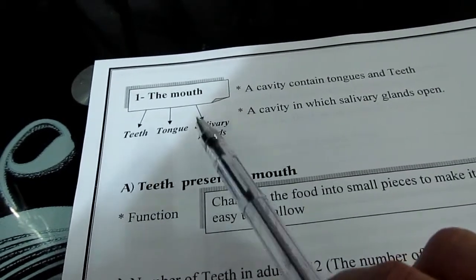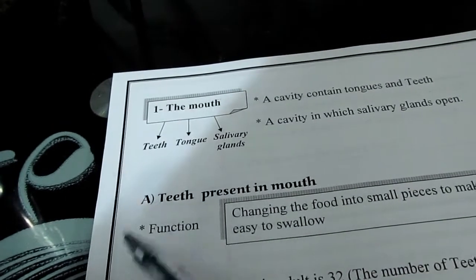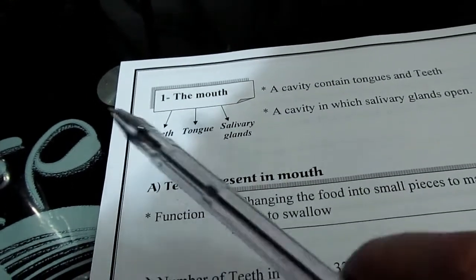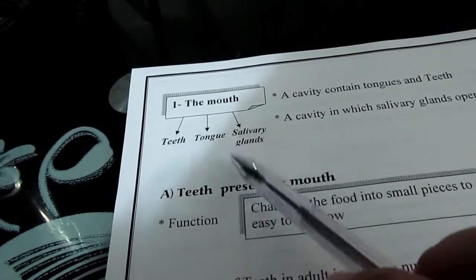But salivary glands, of course, are present in our mouth. We should learn that the mouth contains teeth, tongue, and salivary glands.